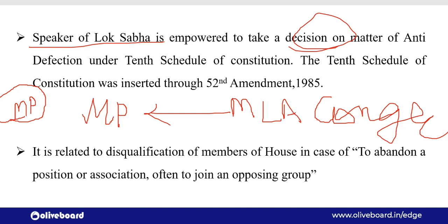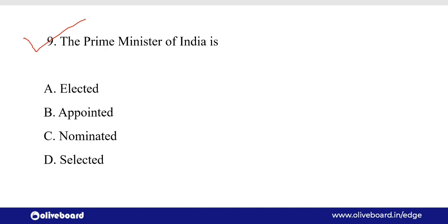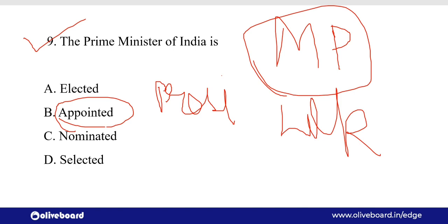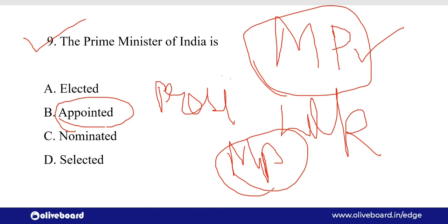The Prime Minister of India is appointed — और उसको appoint कौन करता है — तो वो है President of India। जो लोकसभा के चुनाव होते हैं, उसमें हम सब लोग अपने अपने क्षेत्र के MP को चुनते हैं, और फिर जो भी जीते हुए MP होते हैं वो आपस में decide करते हैं — अगर उनकी majority होती है party की, या फिर दूसरों के साथ संगठित होकर decide करते हैं — कि Prime Minister कौन बनेगा। और फिर उसको appoint करता है President of India।